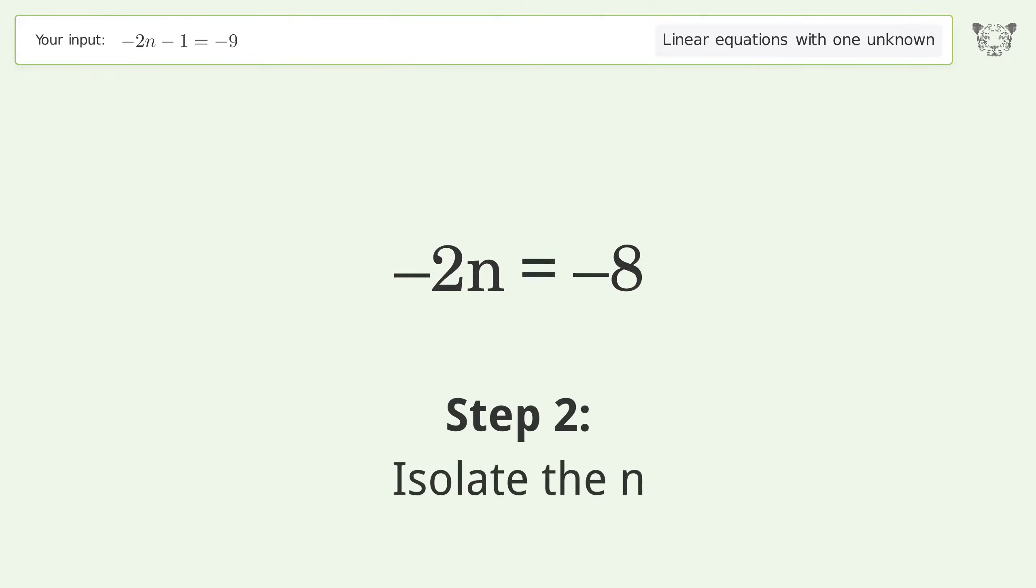Isolate the n. Divide both sides by negative 2. Cancel out the negatives.